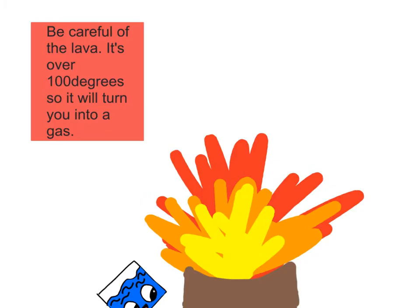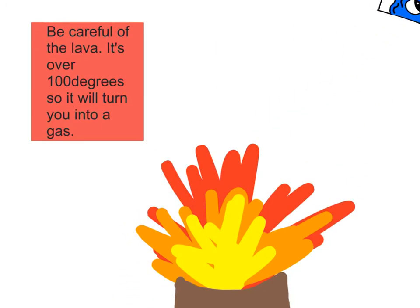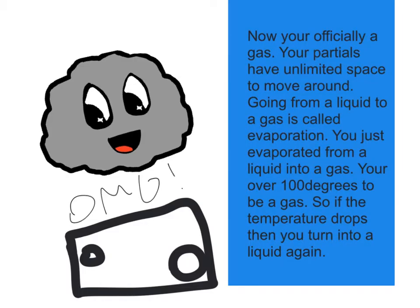Be careful of the lava. It's over a hundred degrees, so it will turn you straight into a gas. Help me! Now you're officially a gas. Your particles have unlimited space to move around. Going from a liquid to a gas is called evaporation. You just evaporated from a liquid into a gas. You're over a hundred degrees as a gas. So if the temperature drops, then you will turn back into a liquid. Here is a diagram of where your particles are. There's so much space — that's how every one of us can move through the air.